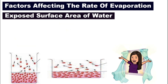Factor number three: exposed surface area of water. Have you ever helped your parents hang out laundry? How do you hang a big blanket? Normally we pull it open as wide and as big as possible so that it dries faster. That is the exposed surface area. Take a look at these two containers — which one do you think will dry faster?